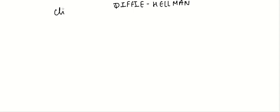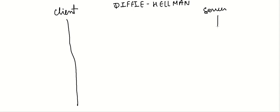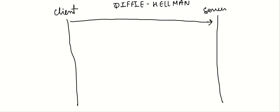Let's go ahead and understand what exactly the Diffie-Hellman algorithm does. Suppose you have your client, which is generally your browser, and there is the server with which you want to connect via an HTTPS connection. At the very first step, the client sends a message to the server which is known as the client hello message.